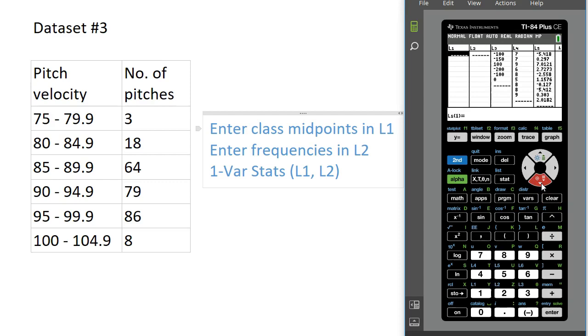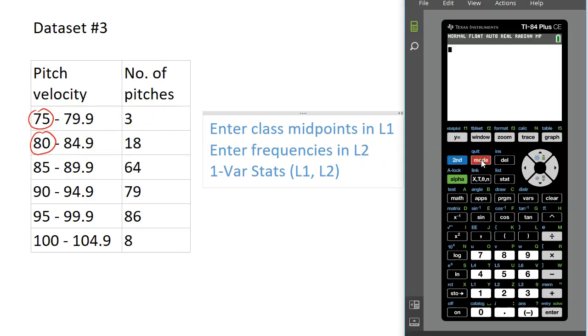You have to be really careful when we do this. When you compute the midpoint for the first class, we are not finding the midpoint between 75 and 79.9. Instead, we're finding the midpoint between 75 and 80. So if I go halfway between 75 and 80, you can add 75 plus 80, that's 155, and then divide by 2. Halfway between 75 and 80 is 77.5.